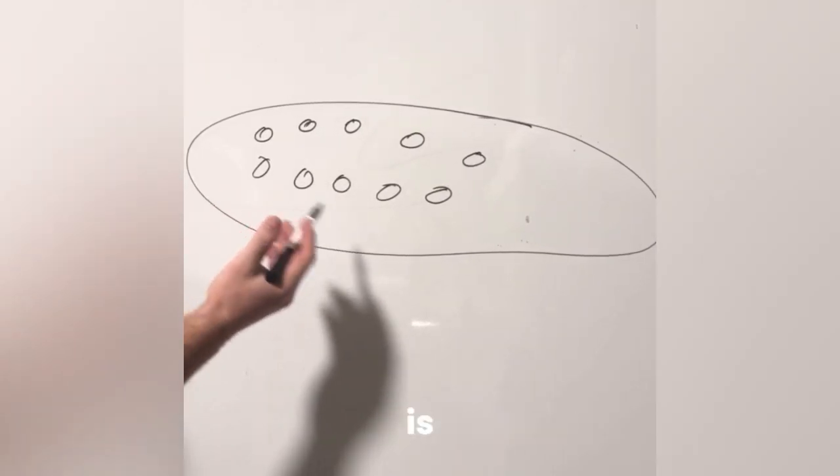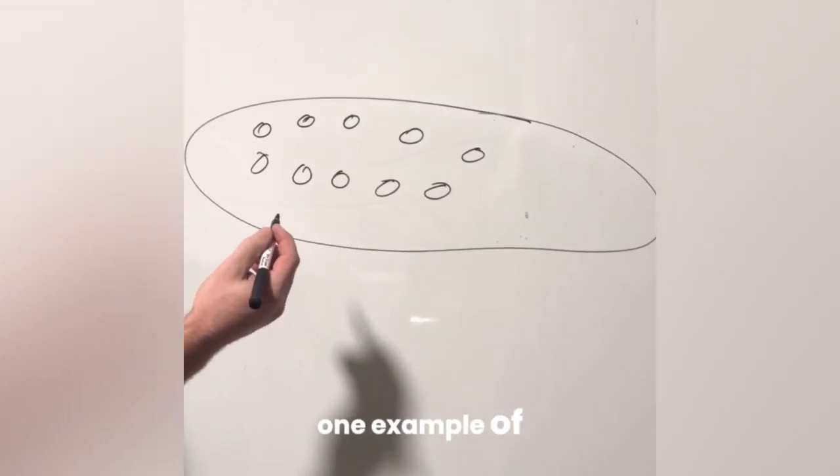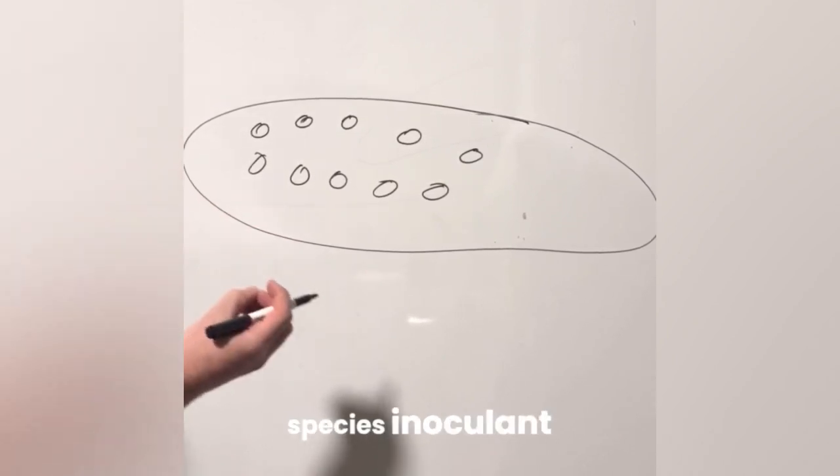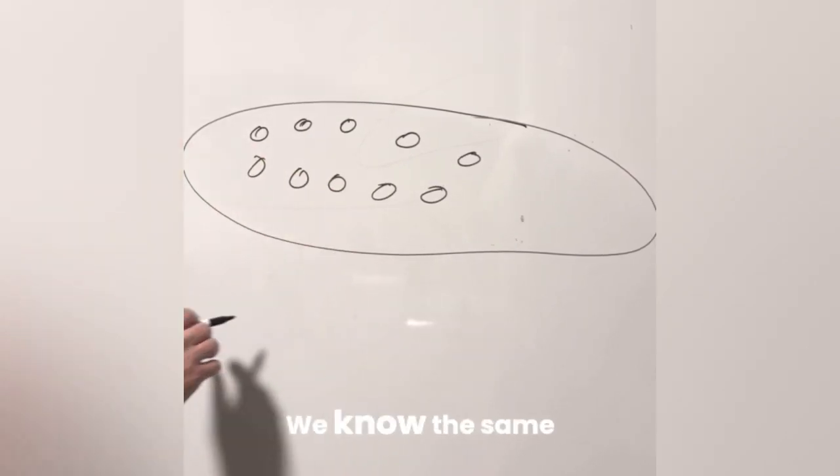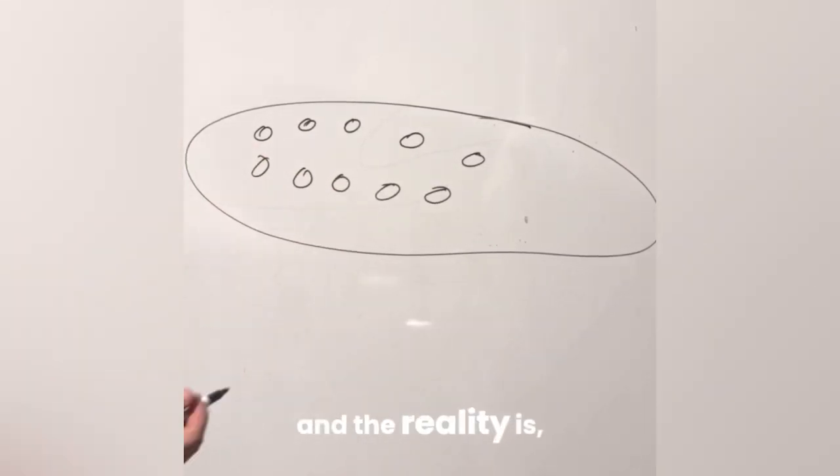Mycorrhizal fungi is one example of what can be a single species inoculant that completely changes the ecosystem. We know the same is true of trichoderma. And the reality is,